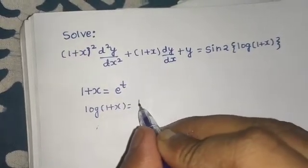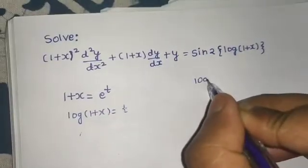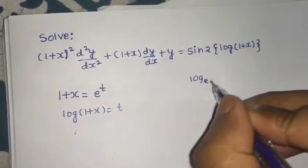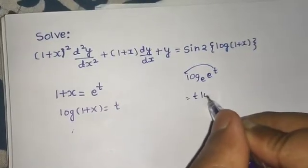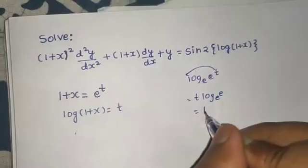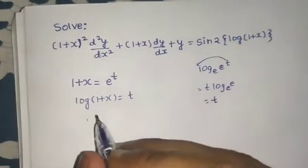Log(e^t) will simply give us t, because I have taken log base e on both sides. This can be written as t*log_e(e), and log_e(e) we all know is 1.